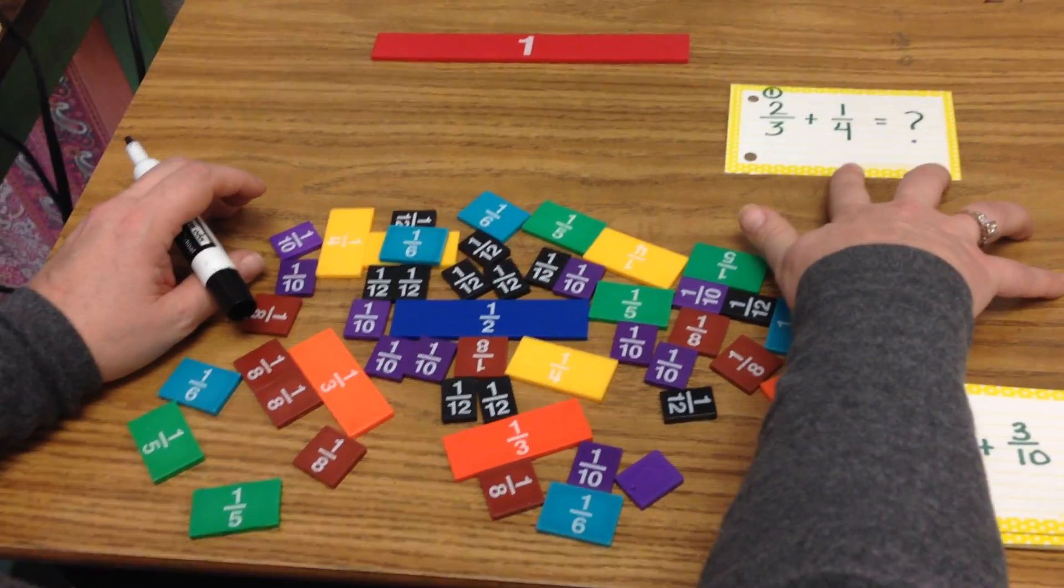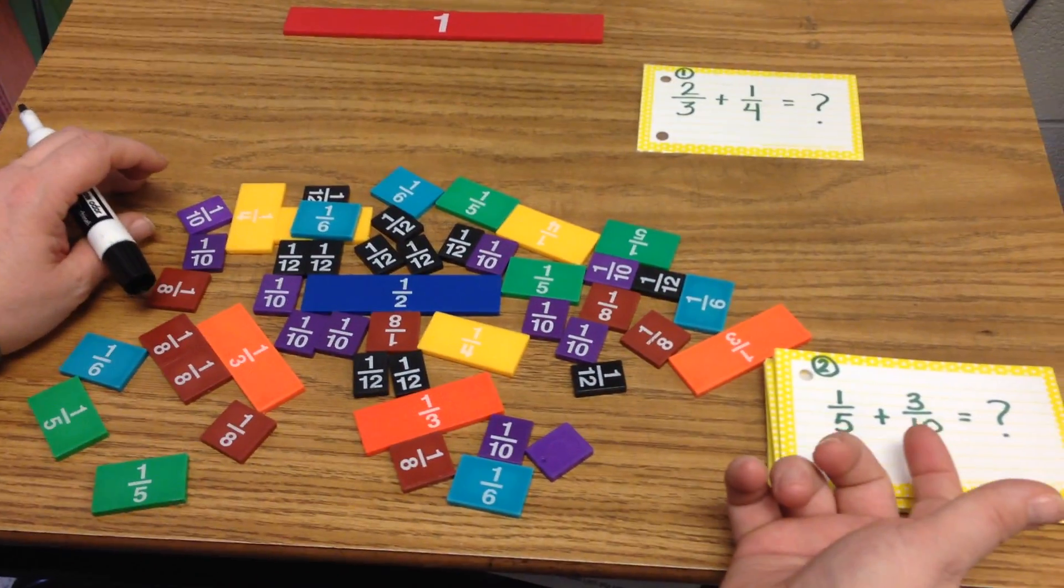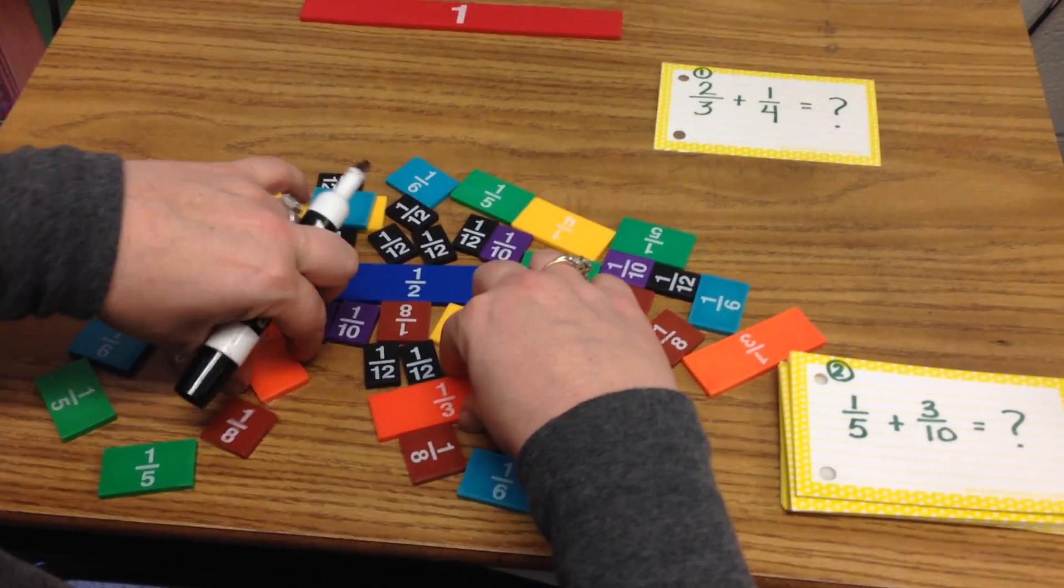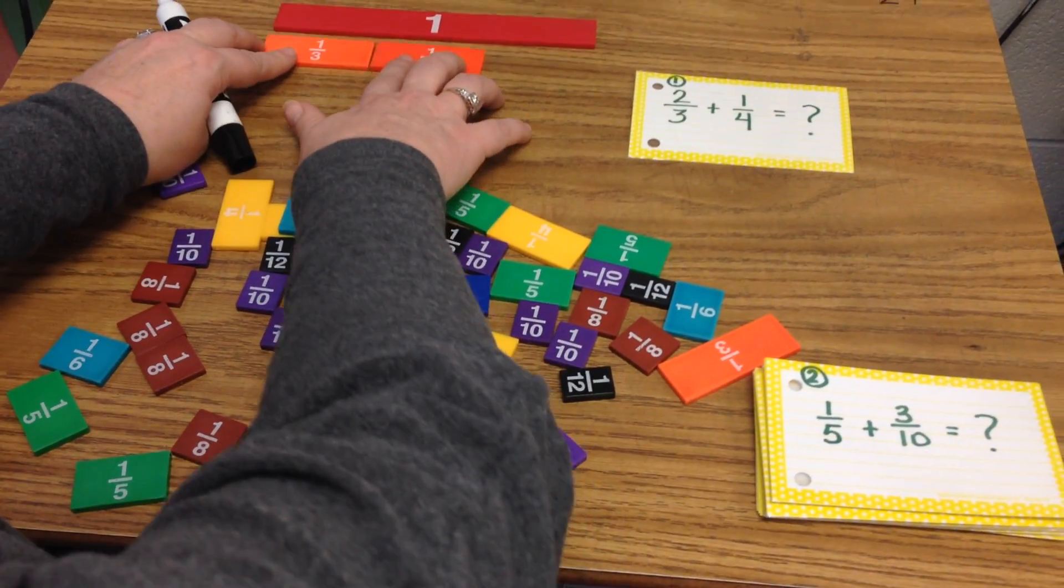Our first problem that we're going to look at is two-thirds plus one-fourth. Because we're adding, we're going to model the first fraction, two-thirds.